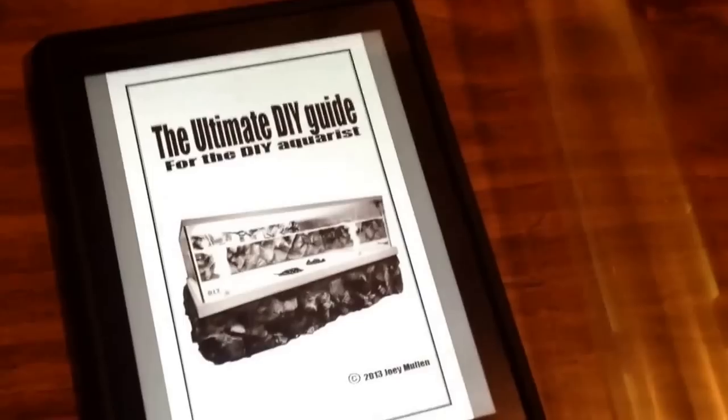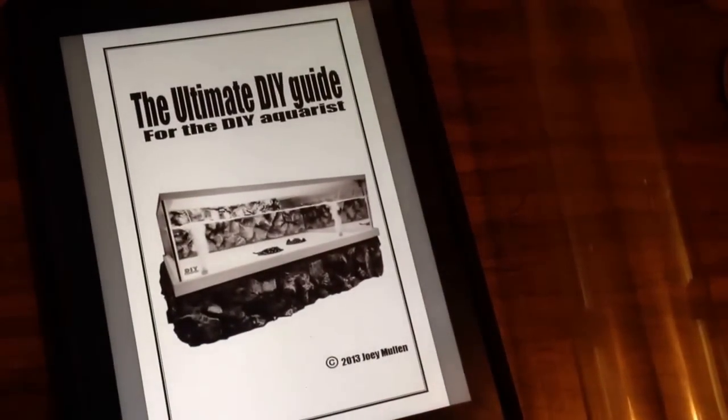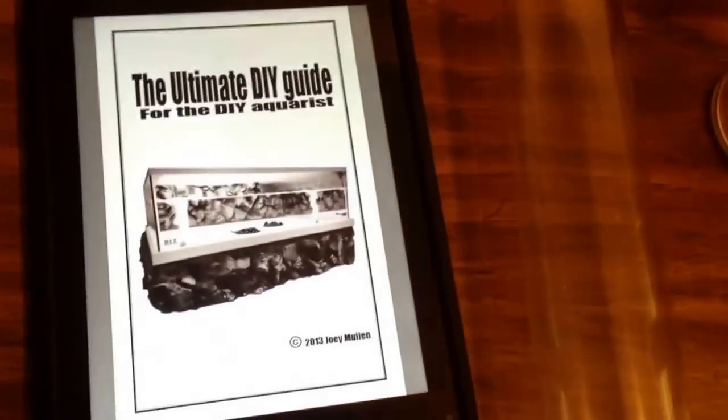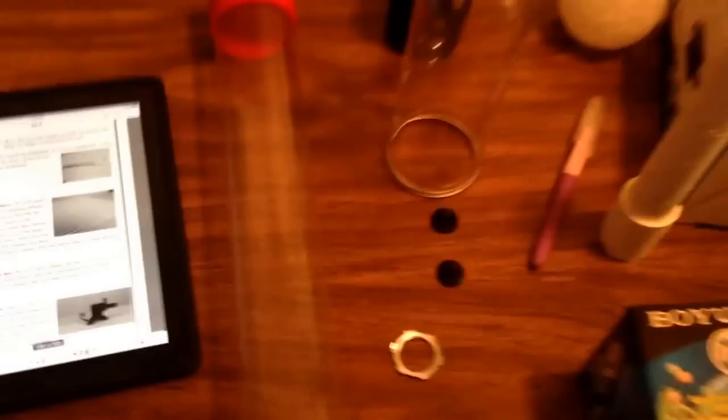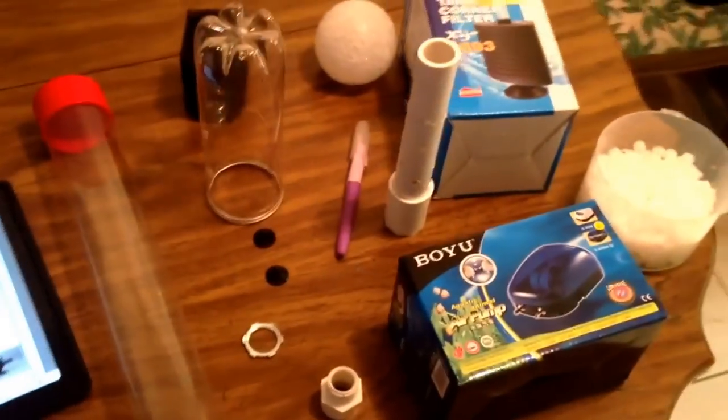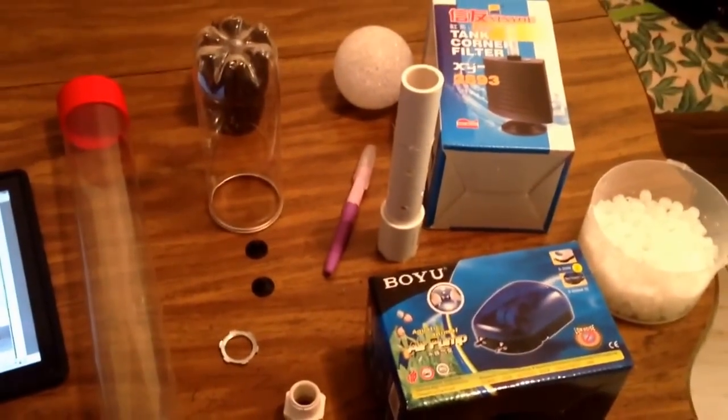Oh, and another very important piece, the ultimate do-it-yourself guide for the DIY Aquarius. This is Joey's, the king of DIY's book. Joey Mullen, you see it there, is 300 pages of just about everything you need to know how to do. So it teaches you how to do everything. I just put a little twist on it with my imagination.